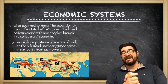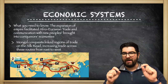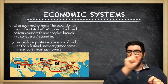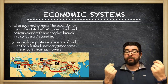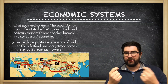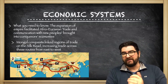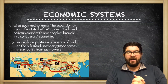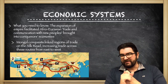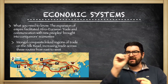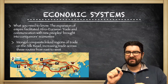With regard to economic systems, the Mongols are going to expand their empire, which will facilitate Afro-Eurasian trade — trade all across the Silk Road — bringing new people together and bringing trade connections more easily between distant parts of the map. The Mongol conquests are going to link regions of the Silk Road, increasing trade along these routes and increasing the spread of innovation and ideas across these routes as well.